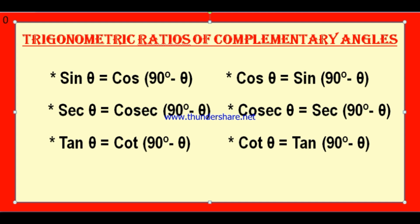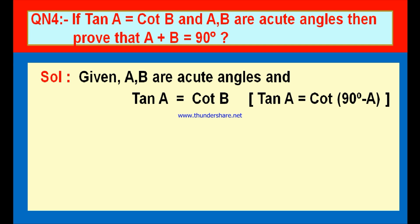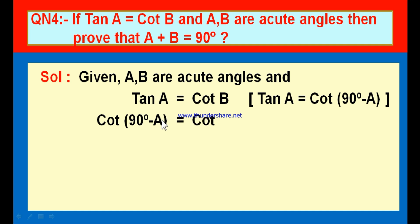We have tan at LHS and cot at RHS. Let us change tan A in terms of cot. We know that cot(90° − θ) = tan θ, or equivalently tan A = cot(90° − A). Therefore, in place of tan A, we substitute cot(90° − A). The new equation becomes cot(90° − A) = cot B.